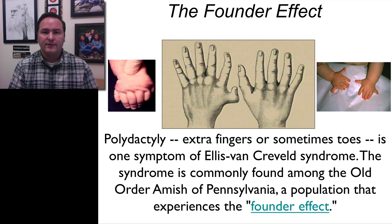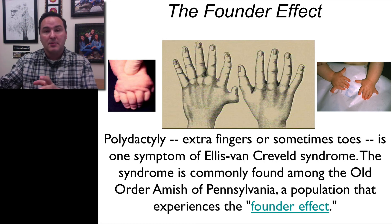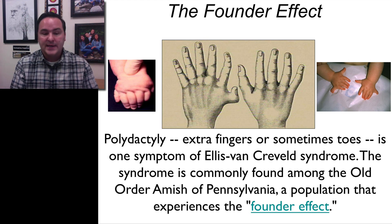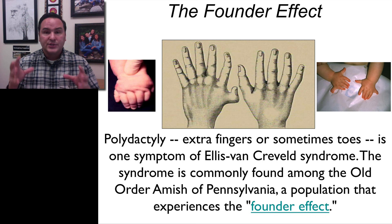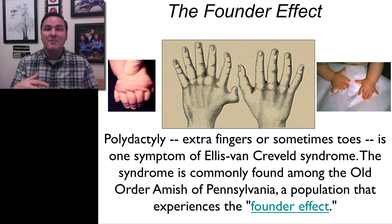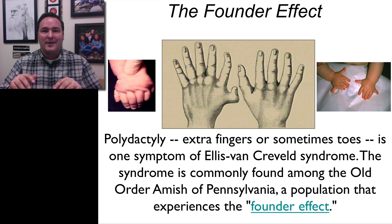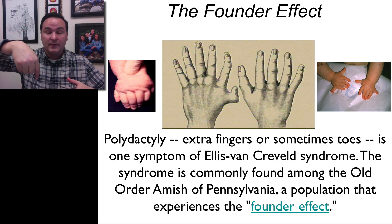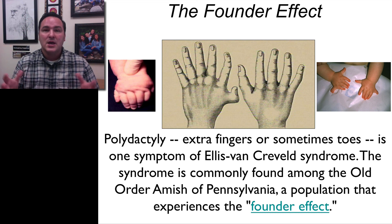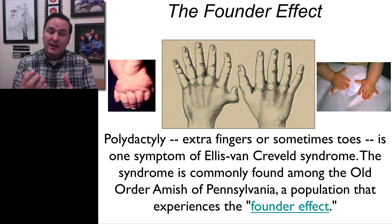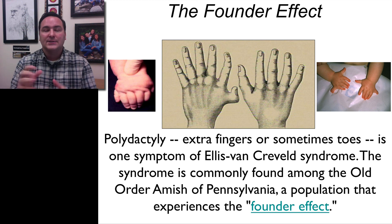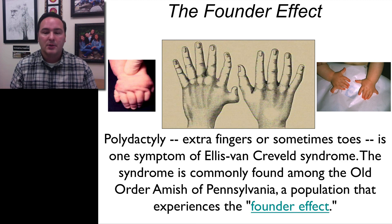The second type of genetic drift is the founder effect, where a few individuals from a large population leave and found a new population. A good example is the Amish in Pennsylvania, who came over from Holland and founded a colony with just a few individuals. Some of those founders carried an allele for polydactyly. Because the Amish don't interbreed with outside populations, that entire community now has a much higher incidence of polydactyly than any other human population — because those founding individuals happened to carry that allele.